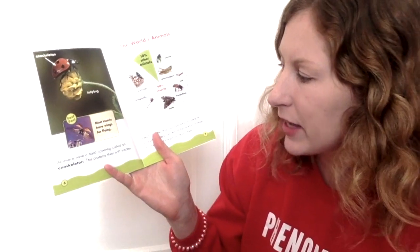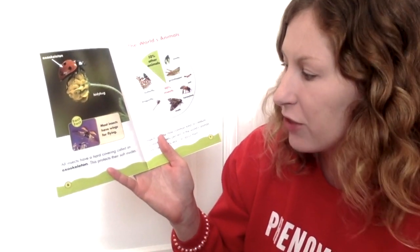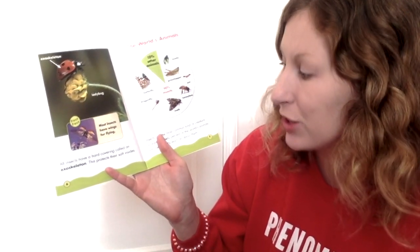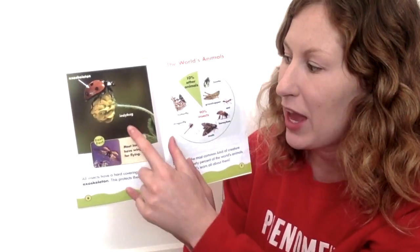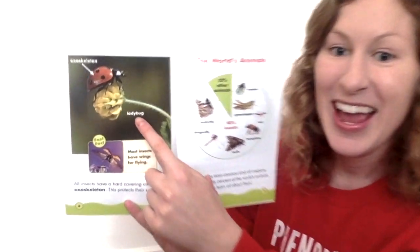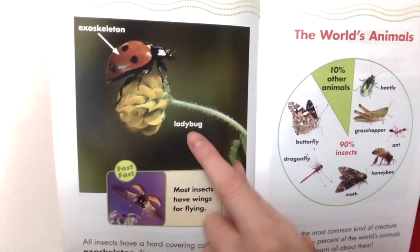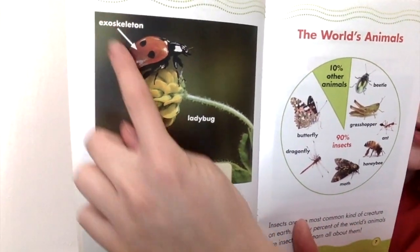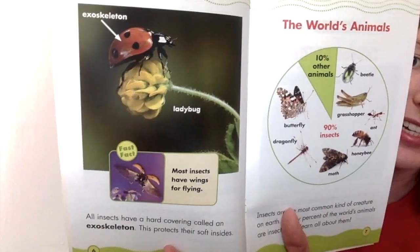All insects have a hard covering called an exoskeleton. This protects their soft insides. Up here we have a ladybug, and our caption points to its exoskeleton that protects their insides.